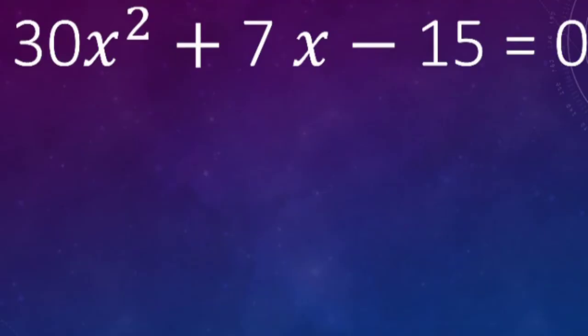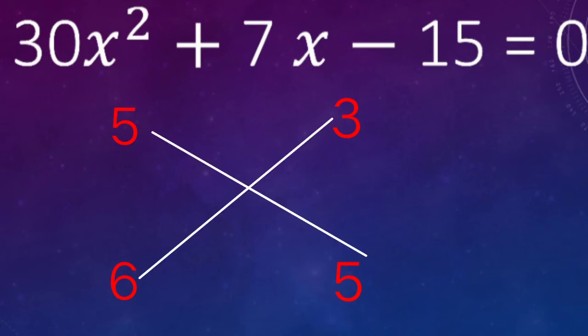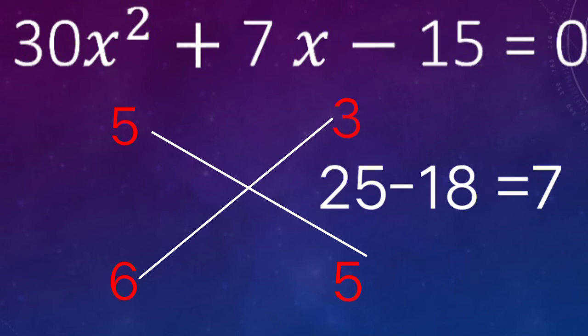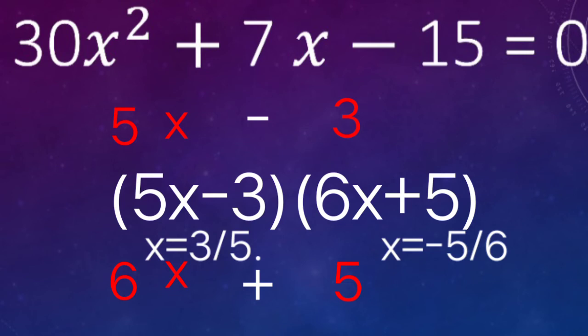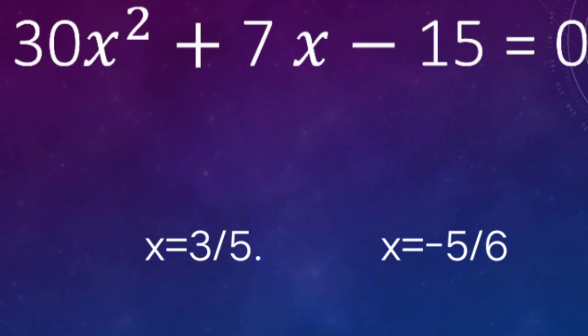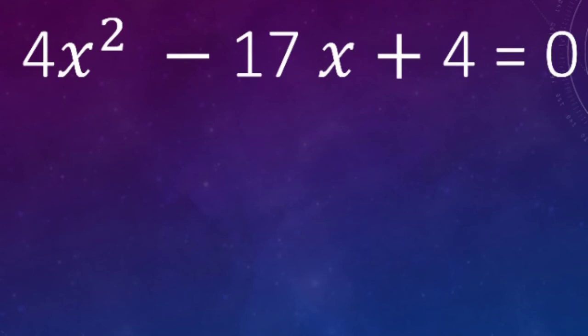Third question: 30x² + 7x − 15. The coefficient of x² is 30; I'll use factors 5 and 6. The constant is 15, so options include 3 and 5, or 1 and 15. Using 3 and 5: cross multiplication gives 3×6=18 and 5×5=25. The difference 25−18=7, which is the midterm. So with minus 3, our answer is (5x − 3) and (6x + 5).